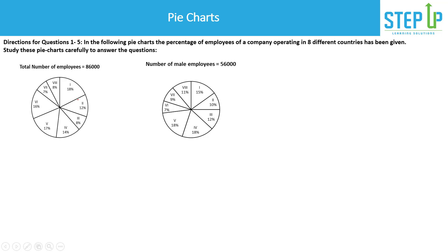Now let's come to our question. It says: in the following pie charts, the percentage of employees of a company operating in eight different countries has been given. There is a company with offices in eight countries, and the split of employees across those countries is given. What is also given is the number of male employees — total employees are 86,000 and total male employees are 56,000 — and the split of those 56,000 male employees across eight countries is also given.